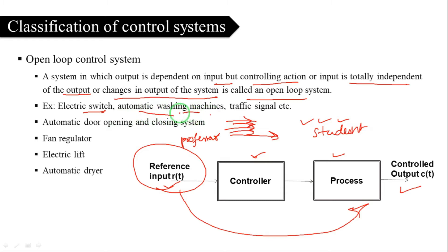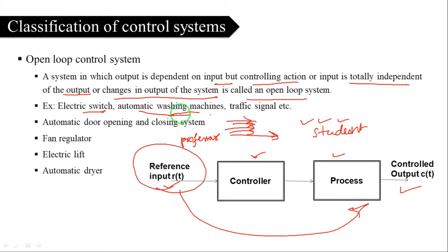Another example is an automatic washing machine. The washing mode is set, the drum rotates, and the instructions run. The automatic washing machine is an example of an open-loop control system.